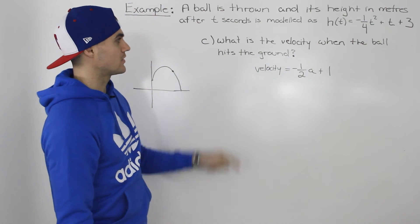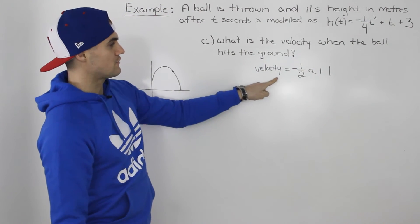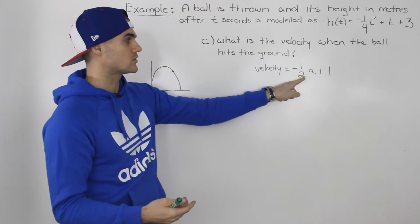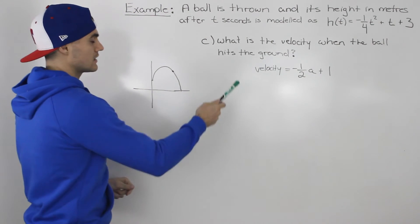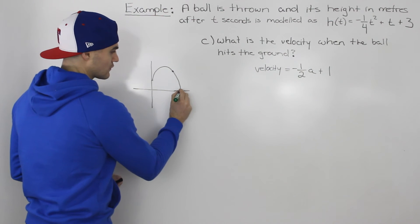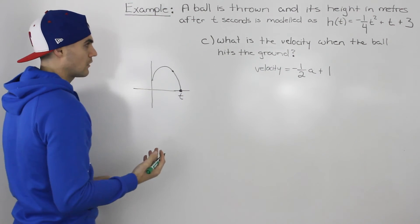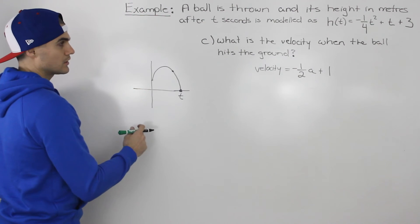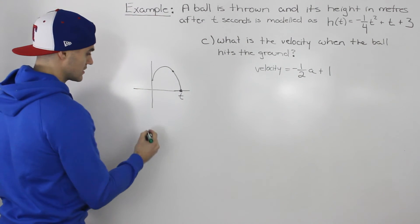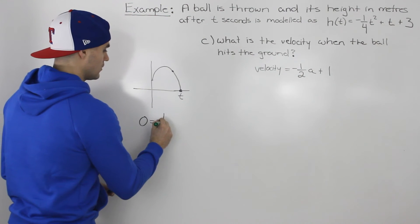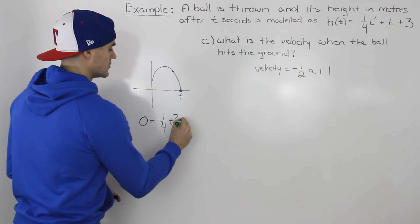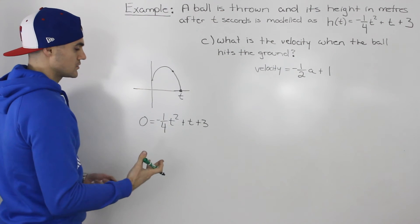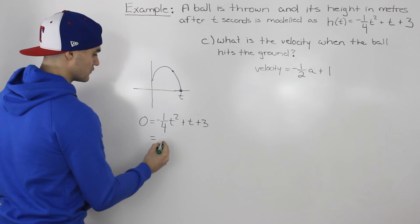Our final question: what is the velocity when the ball hits the ground? We can use the velocity equation from part b — negative one half times a plus one — for any t value a. We just need to find when the ball hits the ground. When the ball hits the ground, the height is zero, so we plug in zero for h and solve for t: zero equals negative one over four t squared plus t plus three. This is a quadratic equation.